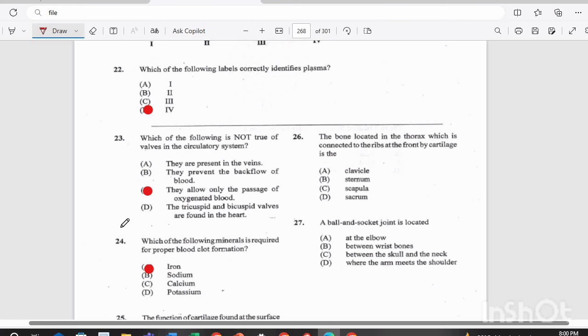Question 26. The bone located in the thorax, which is connected to the ribs at the front, by cartilage, is the A, clavicle, B, sternum, C, scapula, or D, sacrum? The answer there is C, scapula.